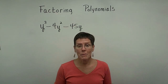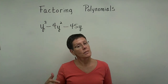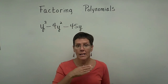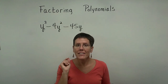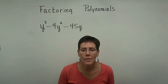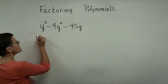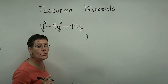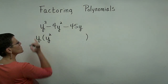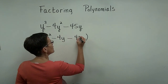By now you're probably getting tired of me reminding you to take the greatest common factor out of any polynomial before you count the number of terms and decide what to do. But again: any problem you're getting ready to factor — if there's a greatest common factor, take that out first. In our first problem, the GCF of the three terms is y. Take that out first. Don't try to do two steps at once. That gives us y times (y² - 4y - 45).